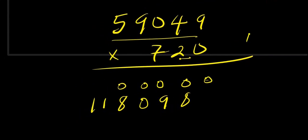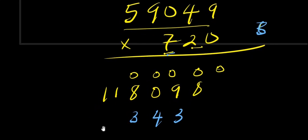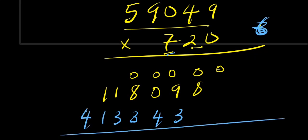Now we use 7 to multiply everything. 7 times 9 is 63, write 3 carry 6. 7 times 4 is 28 plus 6 is 34, write 4 carry 3. 7 times 0 is 0 plus 3 is 3. 7 times 9 is 63 again, write 3 carry 6. 7 times 5 is 35 plus 6 is 41. So that partial product is 413,343. Now we add everything together.